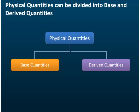Now, in previous lessons, we have learned that there are two types of physical quantities, the base quantities and the derived quantities.